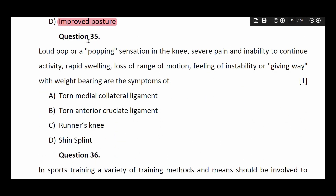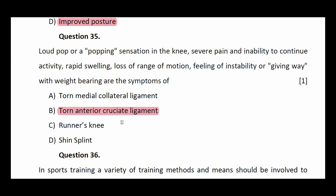Question number thirty-five: loud pop or popping sensations in the knee, severe pain and inability to continue activity, rapid swelling, loss of range of motion, and feeling of instability or giving way with weight bearing are symptoms of — torn medial collateral ligament, torn anterior cruciate ligament, runner's knee, or shin splint. The answer is torn anterior cruciate ligament.